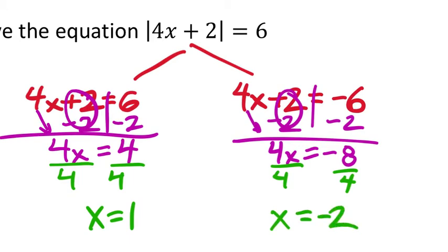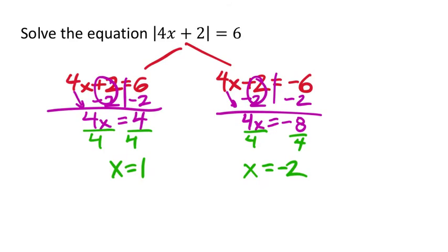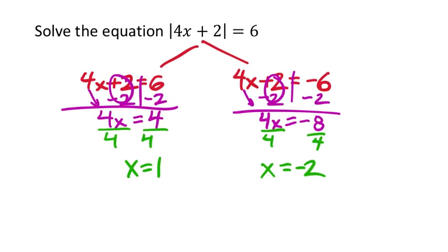Okay, so if we go back, if I were to replace x with 1, I'd get a true statement. We can check that. 4 times 1 is 4 plus 2 is 6. That's positive. How far away is 6 from 0? 6. So that's true.